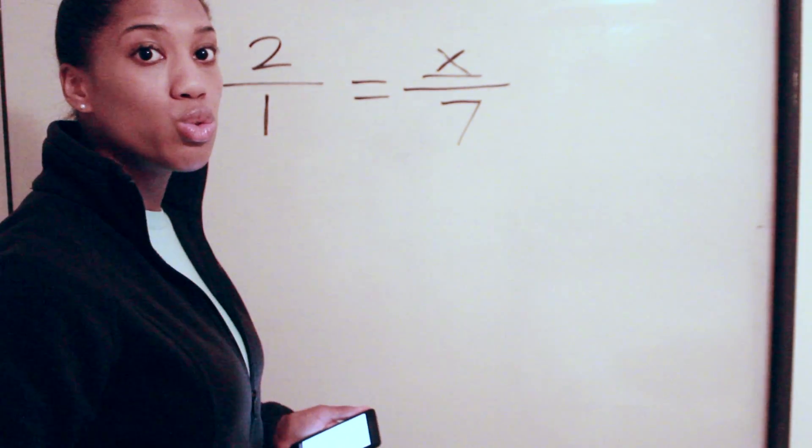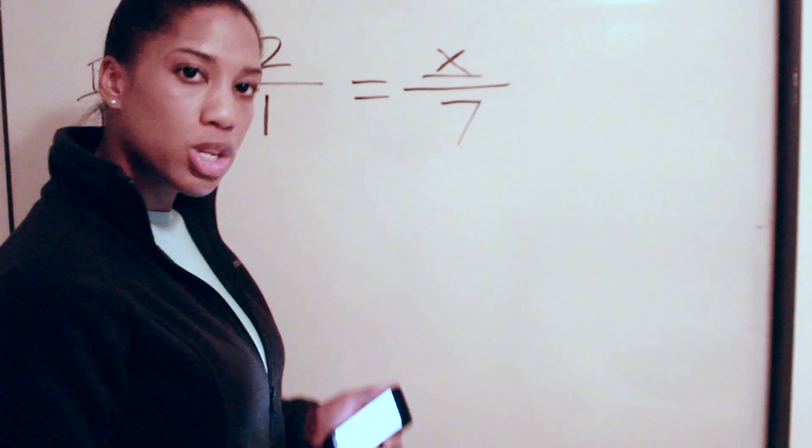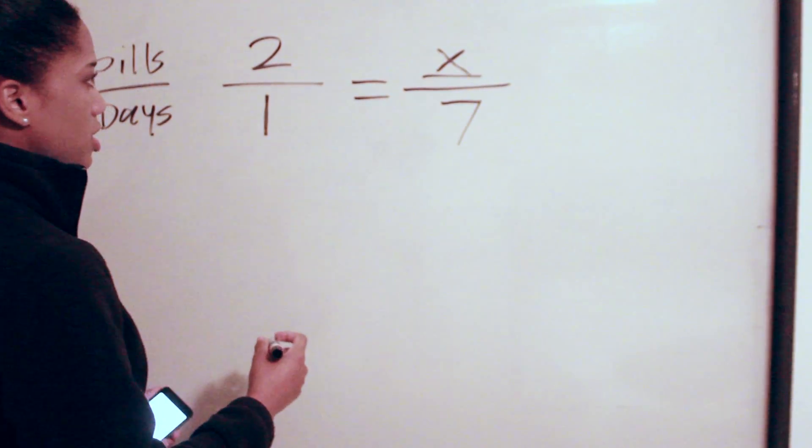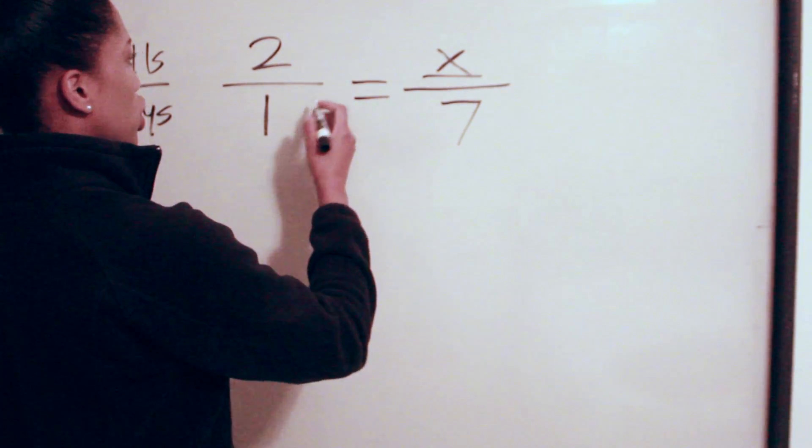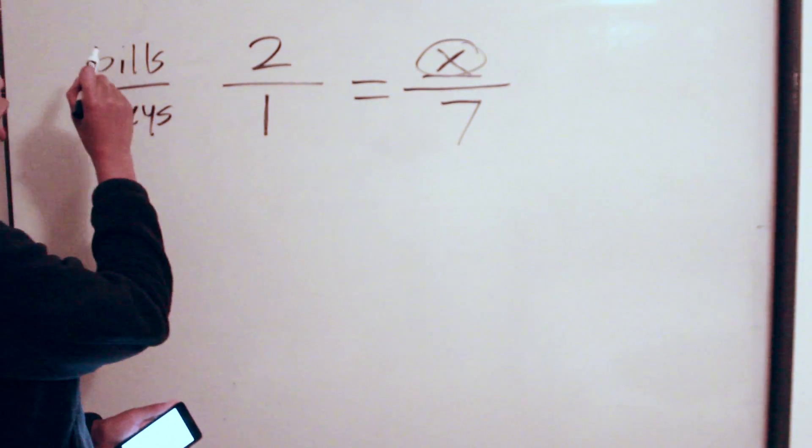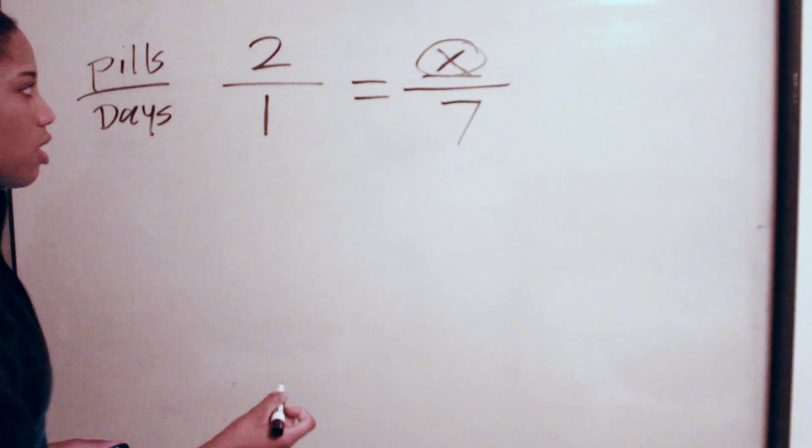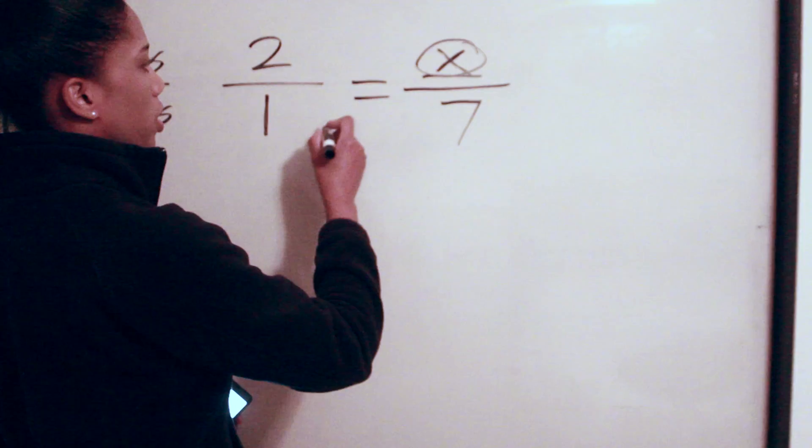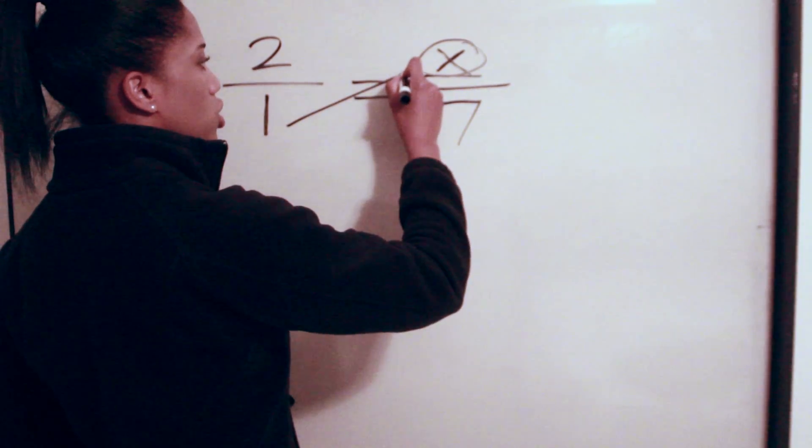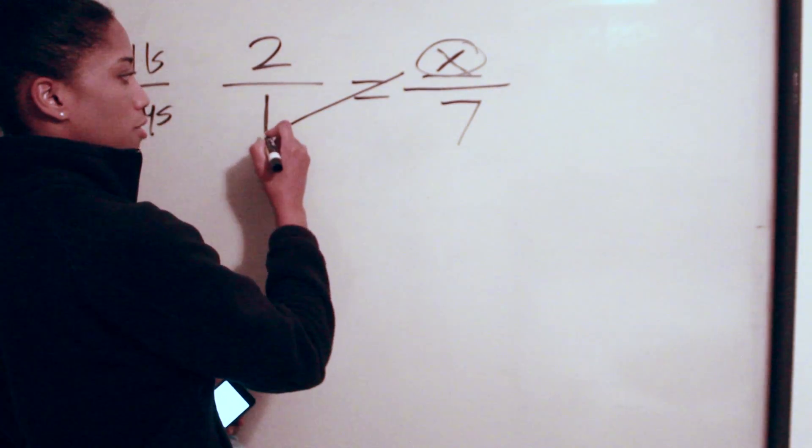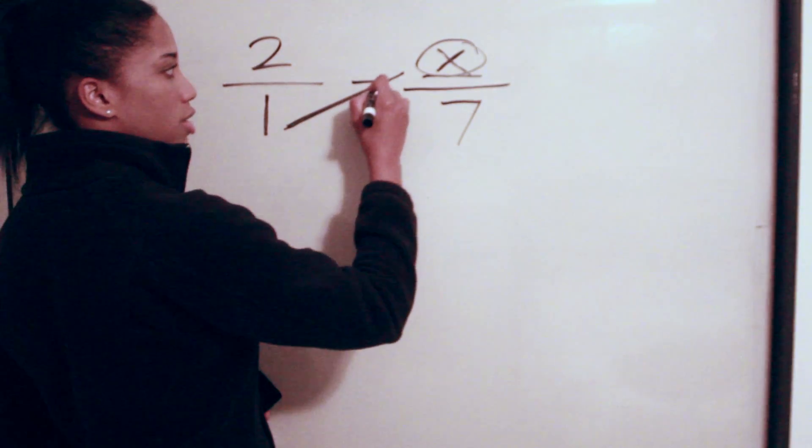We will work this fraction through what we call cross multiplication. You have your missing link right here, which is the number of pills that it would take for seven days. How this works is you want to cross multiply—you start here from this side and cross up to that side.